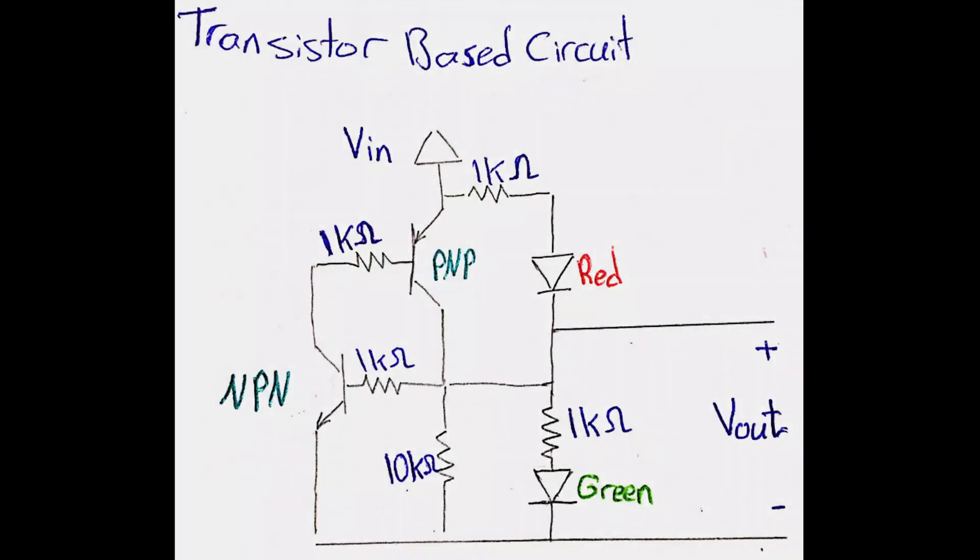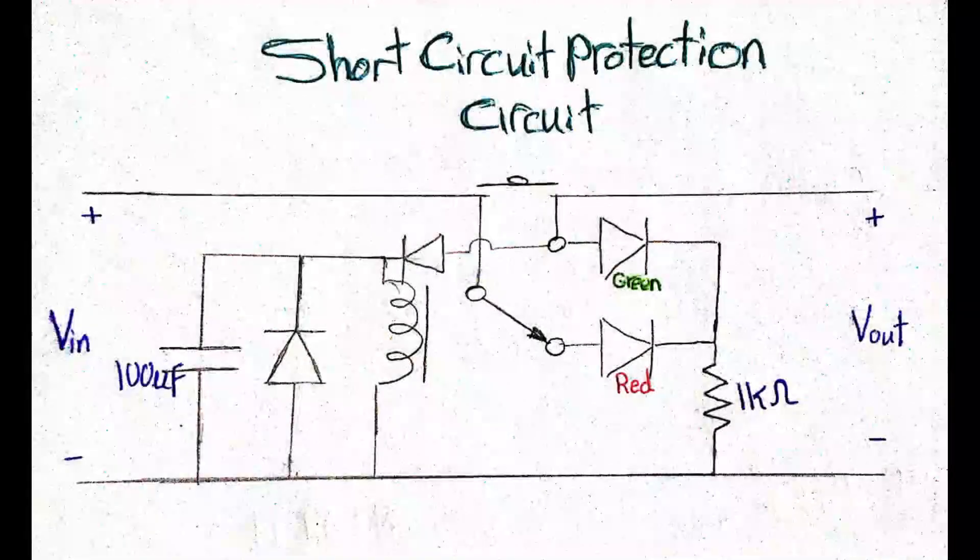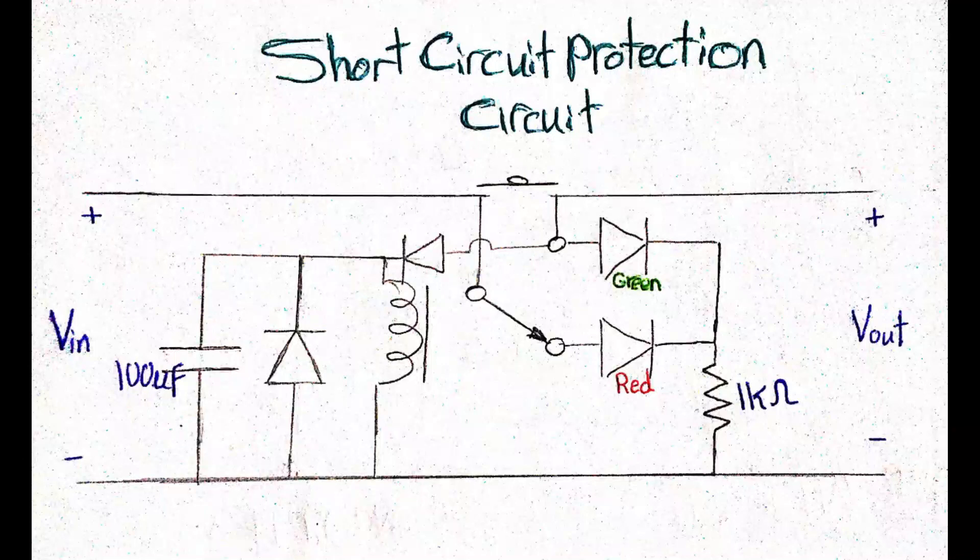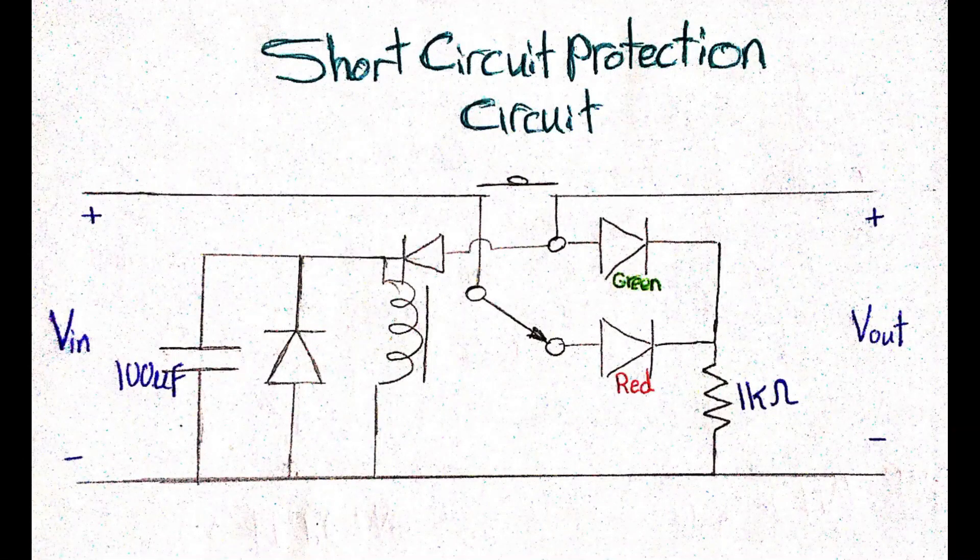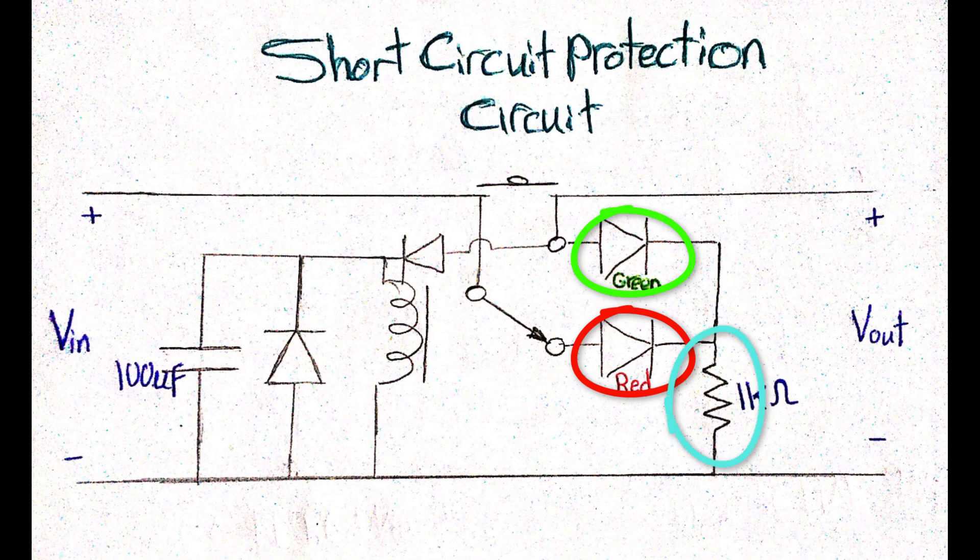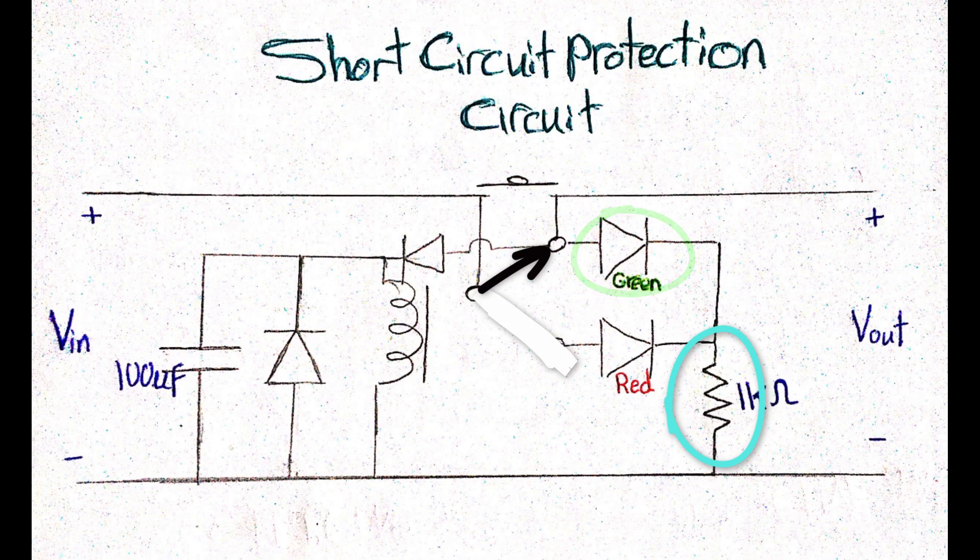Ok, ok, that's fine, no problem. The last thing I want to mention about the relay-based short circuit protection circuitry is that both the red LED and the green LED share the same current limiting resistor, which I think is a nice idea, since, anyways, they don't work together at the same time.